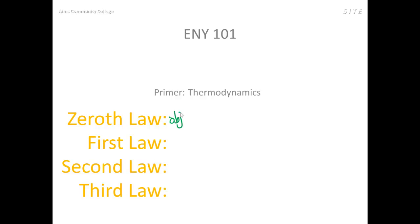So let's say we have three objects, A, B, and C. If objects A and B are in thermal equilibrium, and if objects B and C are in thermal equilibrium, then objects A and C are in thermal equilibrium.